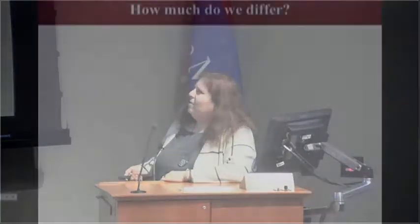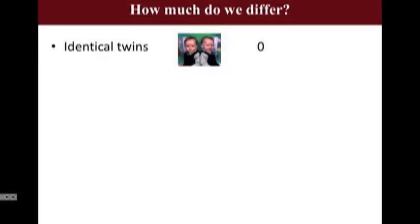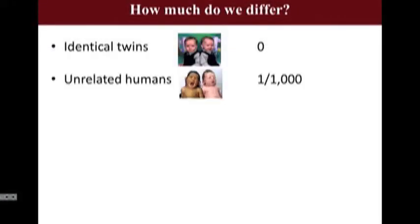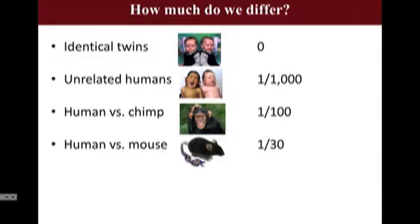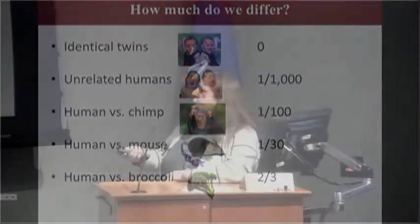How much do we differ? Well, in theory, identical twins should have no differences in their genomes. If we compare any two genomes in this room, we differ at about 1 out of 1,000 nucleotides. Comparing human to chimp it's 1 out of 100, to mouse 1 out of 30, and to broccoli 2 out of 3. Now, considering there are 3 billion DNA bases, that means about 3 million nucleotide variants between any pair of human genomes.